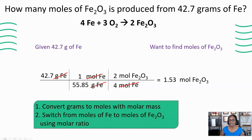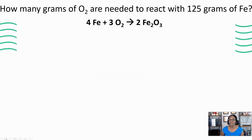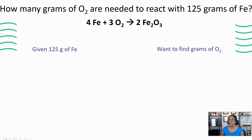Let's summarize these steps. Anytime you're given grams, you want to convert the grams to moles using molar mass. Once you have moles, you can switch from one species to the other — in this case, from moles of iron to moles of iron oxide using your molar ratio. Then you do the math. Now here's our third type of problem: how many grams of oxygen are needed to react with 125 grams of iron? We're using the same equation, but this time we're given 125 grams of iron and we want to find grams of oxygen.